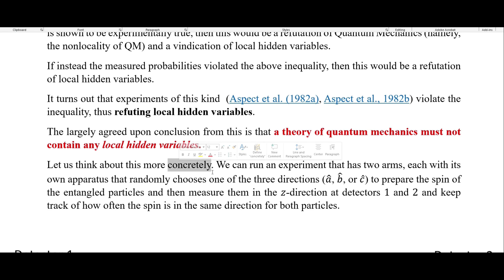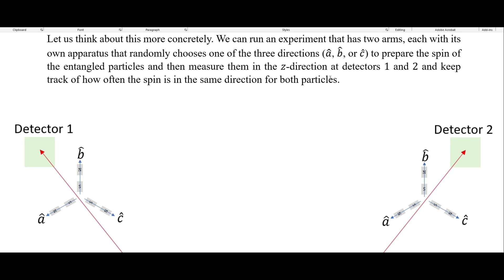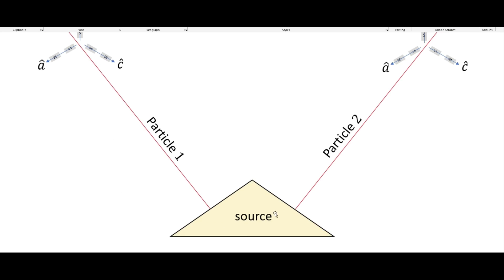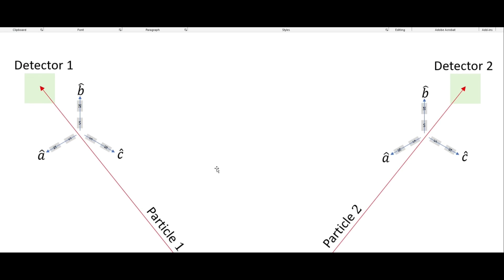So let's think about this more concretely. We can run an experiment that has two arms, each with its own apparatus that randomly chooses one of the following directions: A, B, or C. We have our source of particles — these are the trajectories of particles one and two that are entangled with each other — and then randomly chosen Stern-Gerlach magnets. So we could have B1 move down and be prepared in the B direction, or C1 move in and prepare in the C direction, with A1 measuring in the A direction. We can do that at detector two as well, and this is random, giving us a mixture of each of these combinations. That's this first look at a form of testing Bell's inequality.